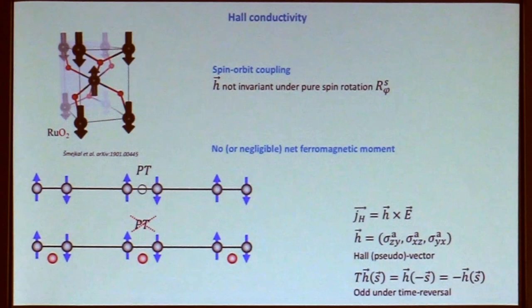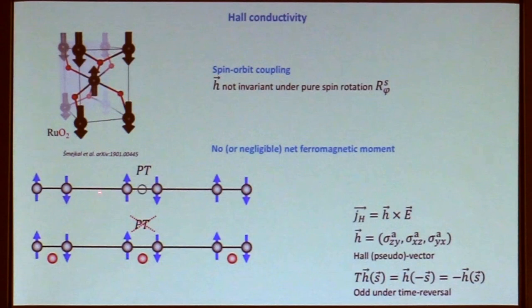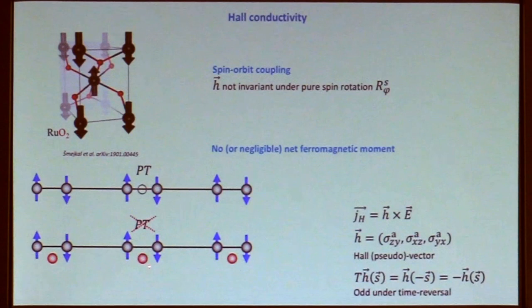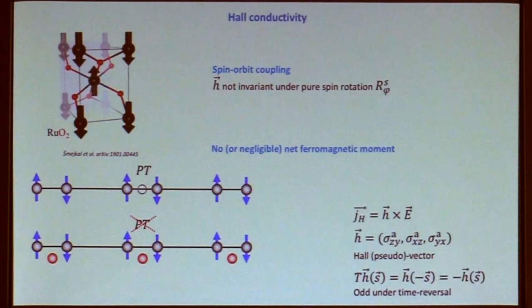Going back to the two-sublattice collinear antiferromagnet — there are many of these, whereas three-sublattice non-collinear antiferromagnets are fewer. The trick, which we will hear a lot about during this conference, is that even in a two-sublattice antiferromagnet, you can simply add an atom that is shifted from the PT center of symmetry. That kills the PT symmetry, and if you kill all remaining symmetries required for the Hall effect, you can have Hall effect even in collinear antiferromagnets — the so-called altermagnets.